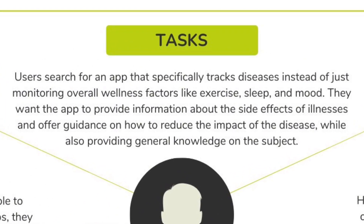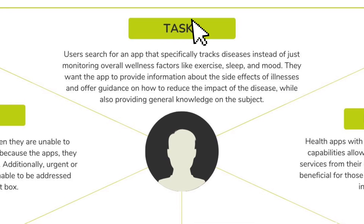Next, the task quadrant is about what users need or decide to do. In our situation, users search for an app that specifically tracks diseases instead of just monitoring overall wellness factors like exercise, sleep, and mood. They want the app to provide information about the side effects of illnesses and offer guidance on how to reduce the impact of the disease while also providing general knowledge on the subject.